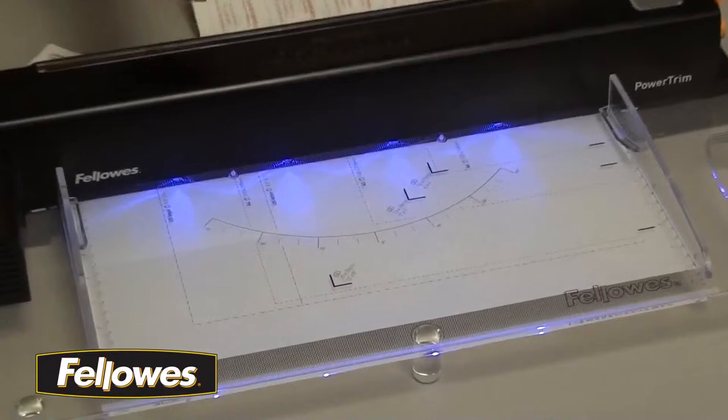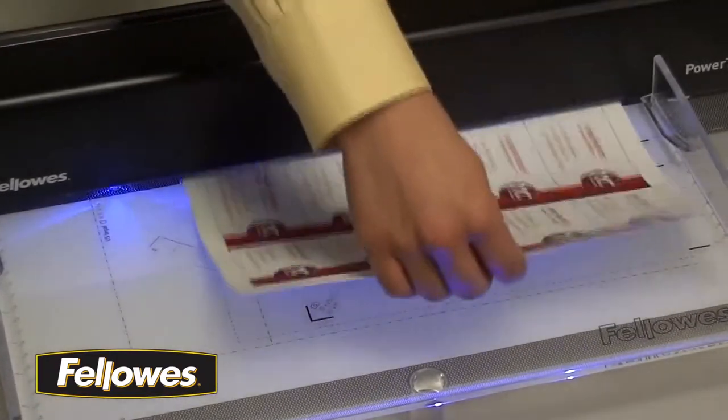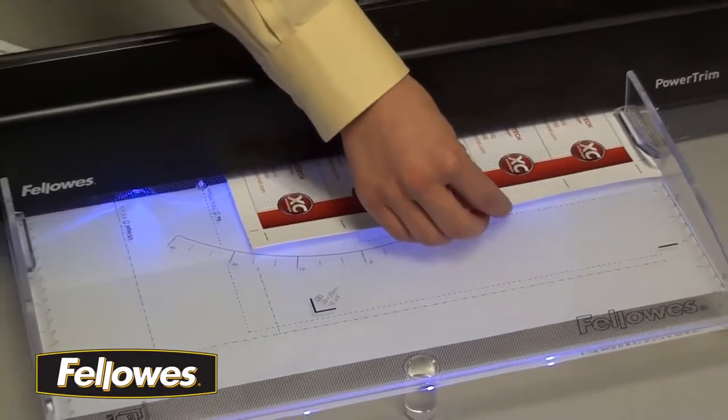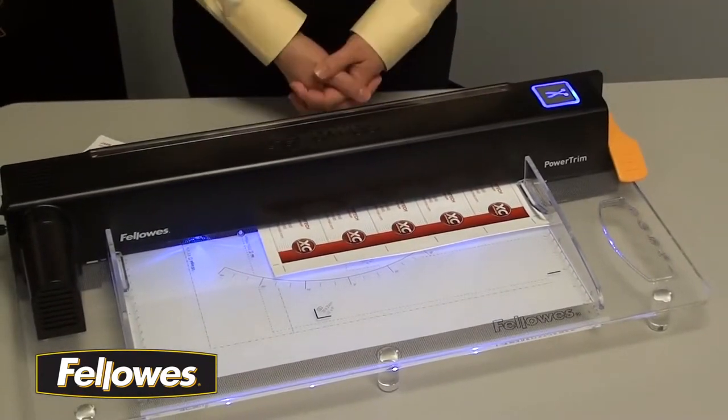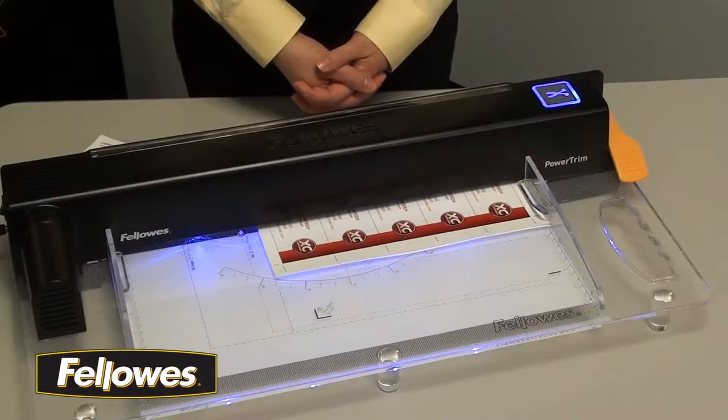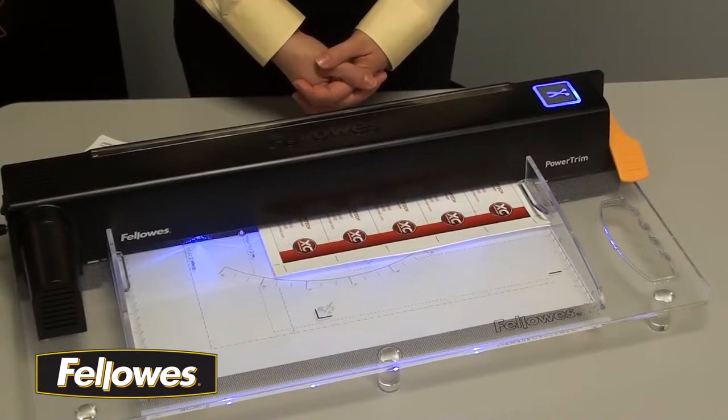Use the lighted acrylic surface to align your document. Then lock it in place with the paper clamp for a precise cut every time. This powerhouse cuts up to 30 sheets with a single touch of a button.